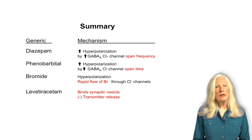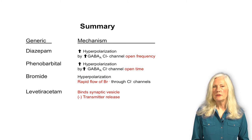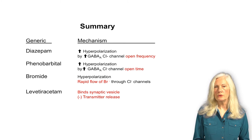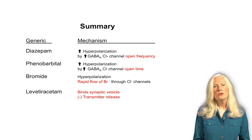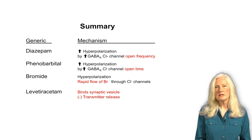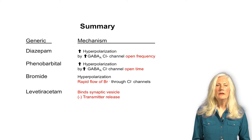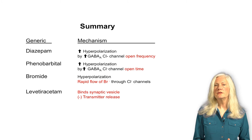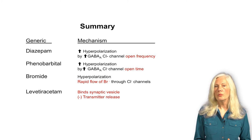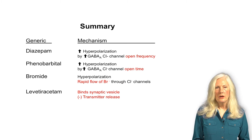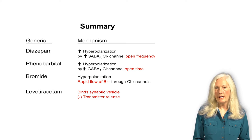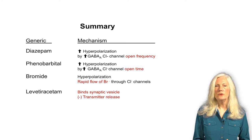You should be able to name the drugs most commonly used for the treatment of epilepsy in the dog and the cat, and know the general mechanism of action of those drugs. In the next section, we'll discuss these drugs in more detail to consider some of their clinically important characteristics, and also review the three anticonvulsants that are often used for their analgesic activity.